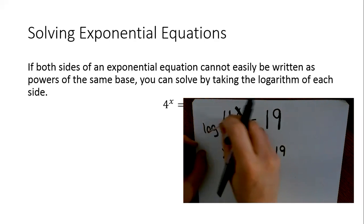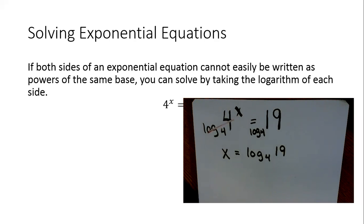Whenever you take the log with the same base and argument, they will cross out. So now we have the dilemma of, well, how do I figure out what log base 4 of 19 is? We have two options really.